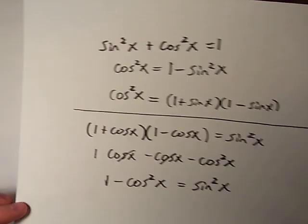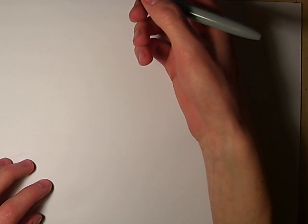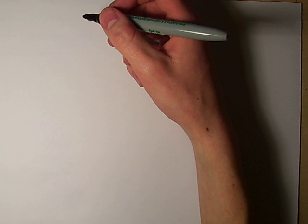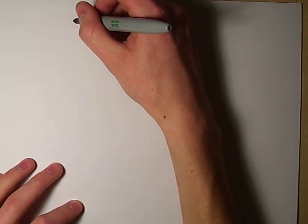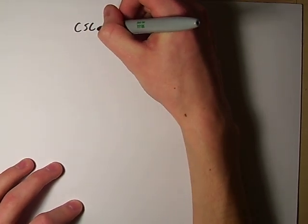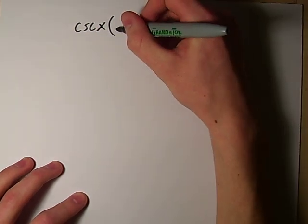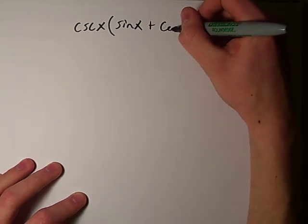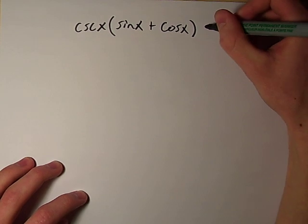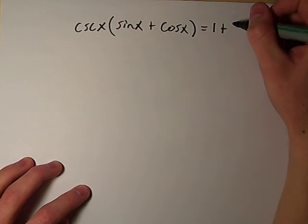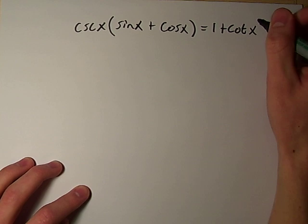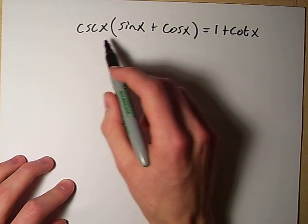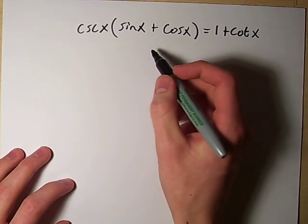Other than that, if you get an identity and you see brackets initially, like we'll have a look at one that's perhaps a little bit simpler than the one we just did. Like if you have cosecant x multiplied by sine x plus cosine x equals 1 plus cotangent x. Then really, all you can do here is multiply out the brackets. And you'll just need to remember how to FOIL.